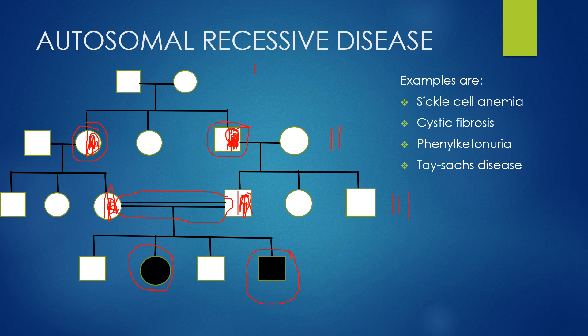Some examples of autosomal recessive diseases are sickle cell anemia, cystic fibrosis, phenylketonuria, and Tay-Sachs disease.